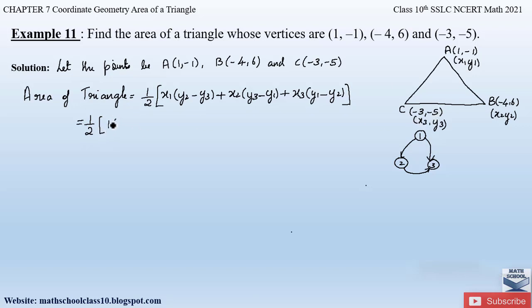So now apply the formula by substituting the values. So half into, what is x₁ value? It is 1, into (y₂ - y₃). y₂ is 6 and y₃ is -5, so it is y₂, that is 6, minus y₃ value which is -5. Always remember here that you have to take the sign correctly. People go wrong only by sign confusion, so always remember to take sign values properly.